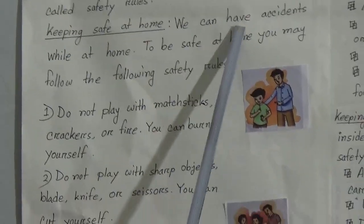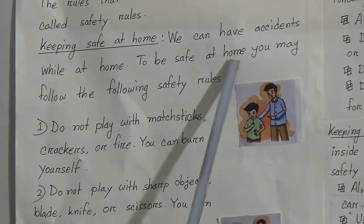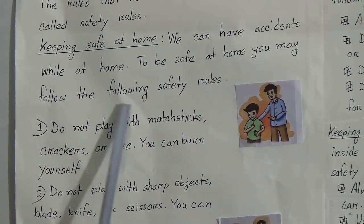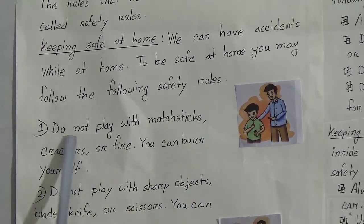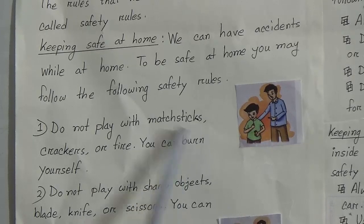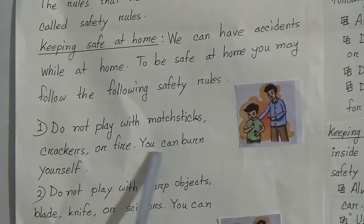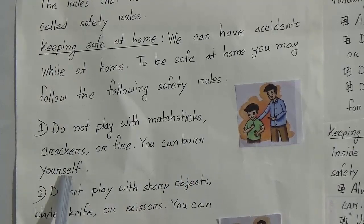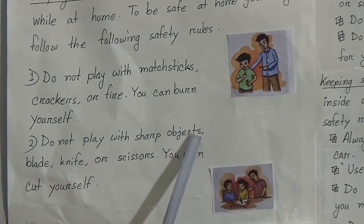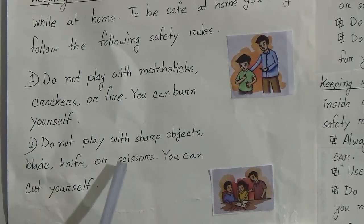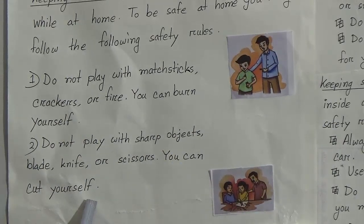Now we will learn what safety rules are. Keeping safe at home — we can have accidents while at home. To be safe at home you may follow the following safety rules. Rule number one: do not play with matchsticks, crackers, or fire — if you do this you can burn yourself. Rule number two: do not play with sharp objects like a blade, knife, or scissors — you can cut yourself.